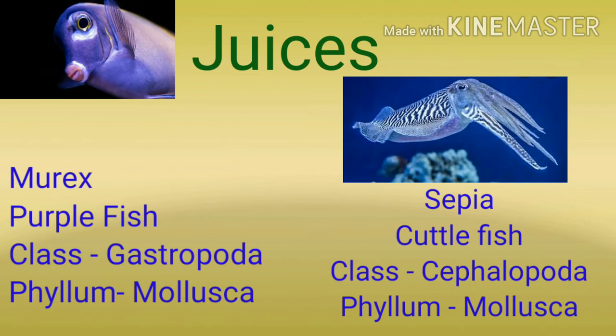अब हम बात करते हैं animal juices से कौन सी homeopathic medicines बनती हैं। यहाँ पर दो examples लिये हैं, दोनों fishes के हैं। First one is Murex जिसका common name है purple fish, class Gastropoda और phylum Mollusca।